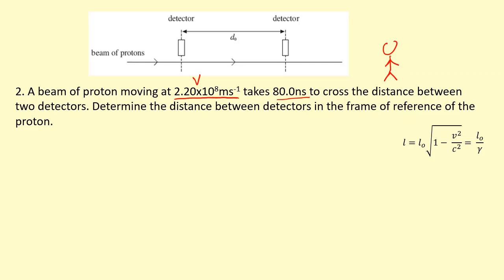It takes 80 nanoseconds to go past, so you can just use the speed equals distance over time formula to figure out the distance between them. So the distance will be velocity times time. That gives me 17.6 meters. Now that is the distance between the two detectors, and because the person is standing at rest with respect to the detectors, that is the proper length.